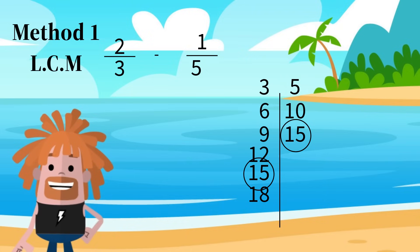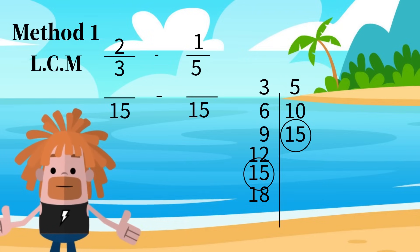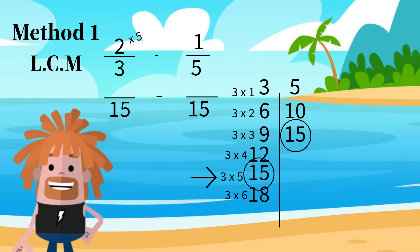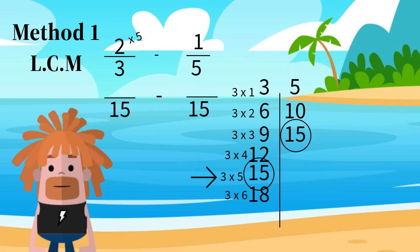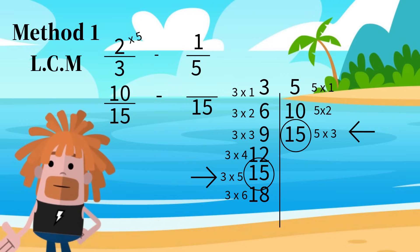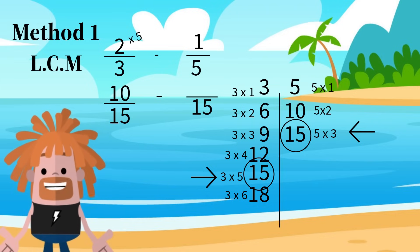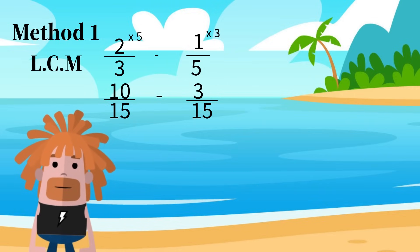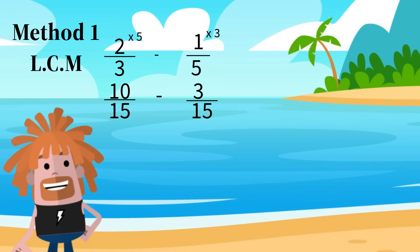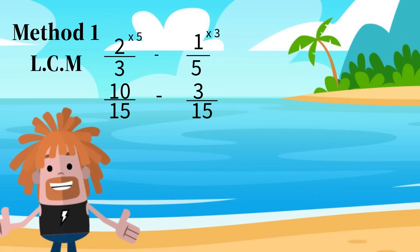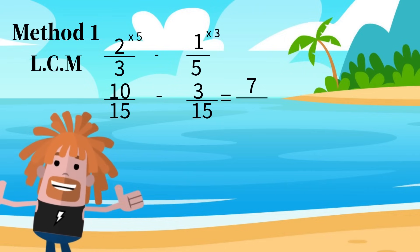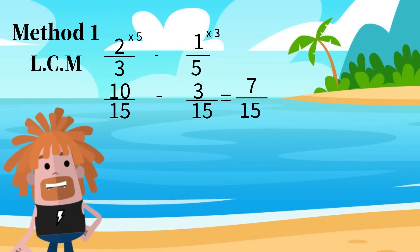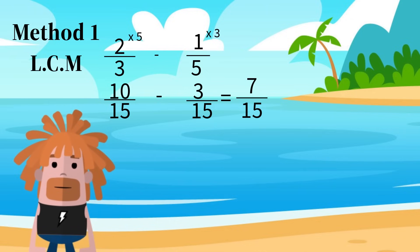Now to form our equivalent fractions. For our first fraction, to get 15 we multiplied by 5, so we are going to multiply our numerator by 5: 5 times 2 equals 10. For the second fraction, to get 15 we multiplied by 3, so we multiply the numerator by 3: 3 times 1 is 3. Since we are doing subtraction, we subtract our numerators: 10 minus 3 is equal to 7. 7 is our numerator, and we put back our denominator, 15. The answer is 7 fifteenths.